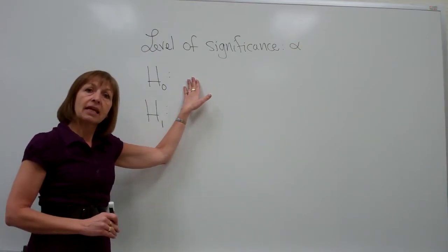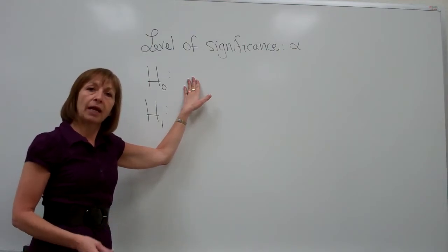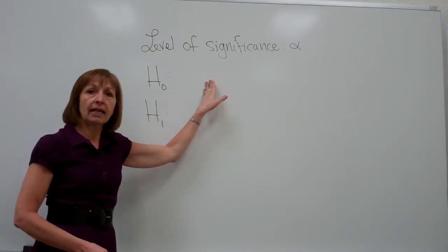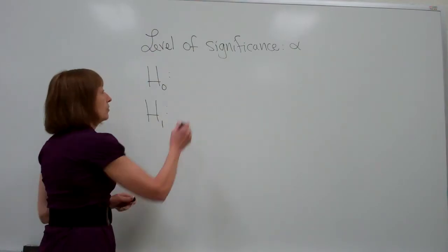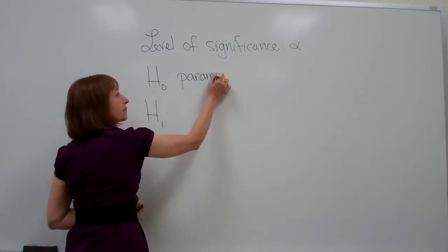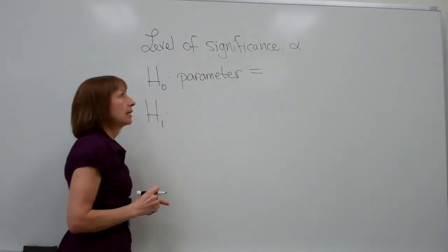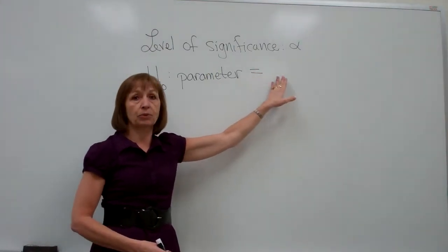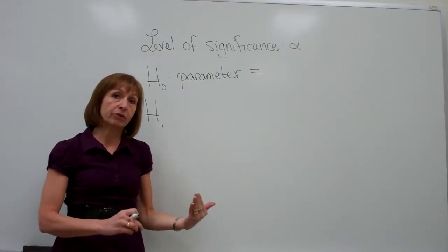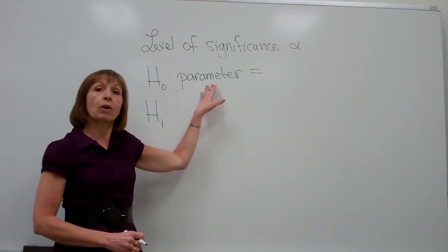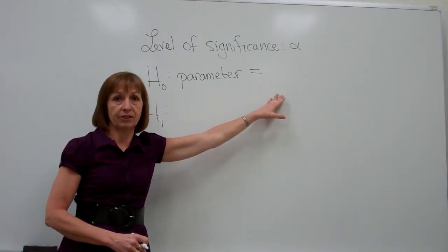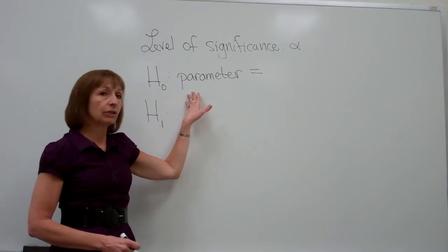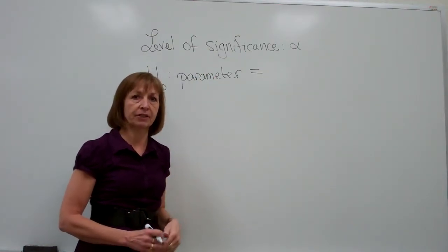In the null hypothesis, if we're testing a claim about a parameter of a population, we'll use the symbol for the population parameter and then an equal sign and then a numerical value. If we're testing a claim about a particular parameter across two populations, it'll be the parameter of one population equal to the parameter of the other population. If we're looking at a characteristic about a population, then we would write a sentence that talks about what that particular characteristic is.